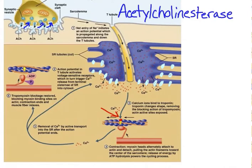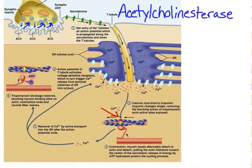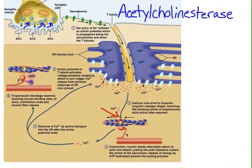We also have sodium-potassium pumps located on the sarcolemma. The sodium-potassium pumps, just like the calcium pumps, need ATP in order to work. For each ATP, two potassium ions are transported into the cell and three sodiums are transported out of the cell. This is in order to keep the electrochemical gradient and reset the cell for the next action potential to follow.